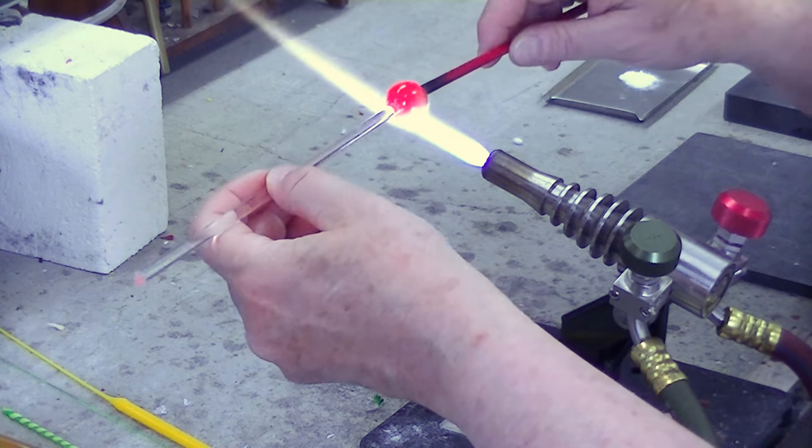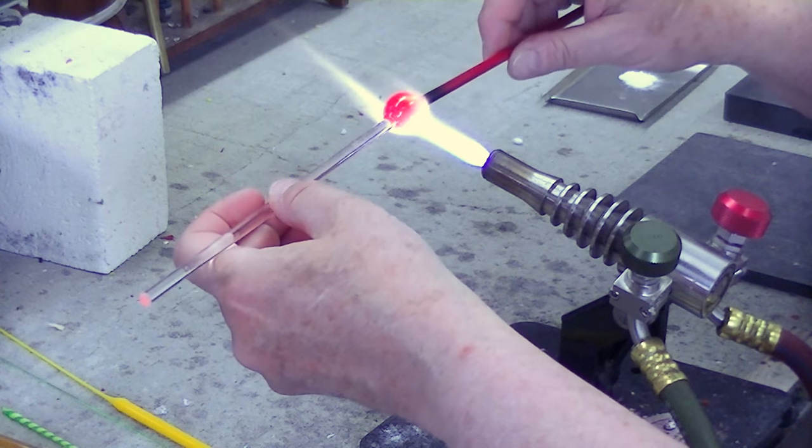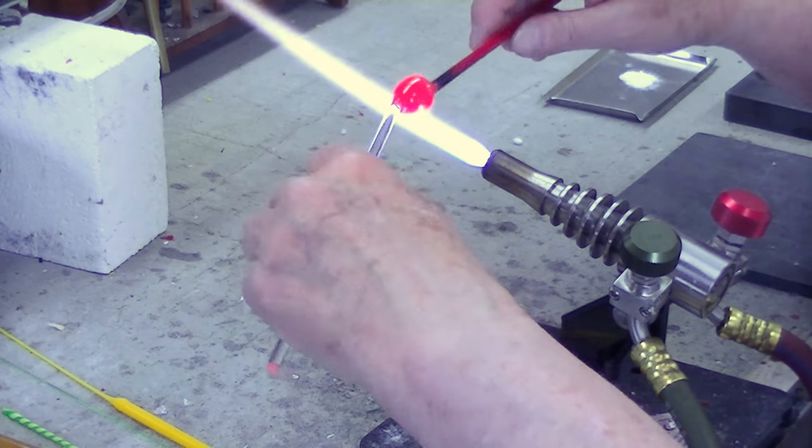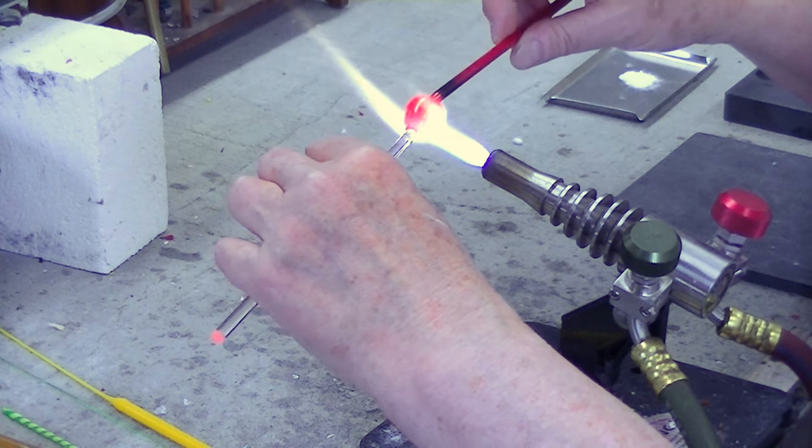It's very important when you pull this that you maintain a straight pull. Don't twist your hands because you want to have a stringer that has one color on one side and an accent color on the other side.